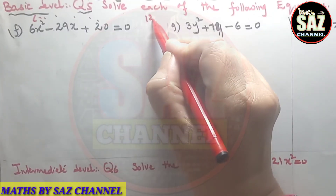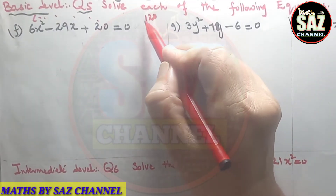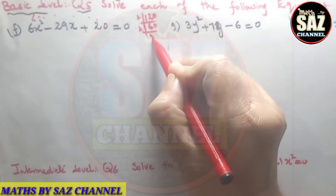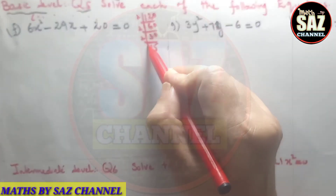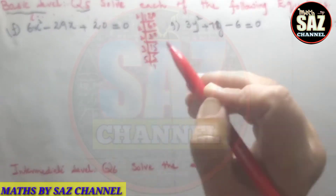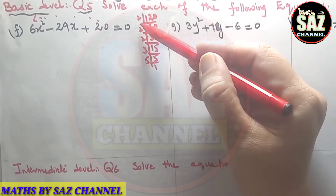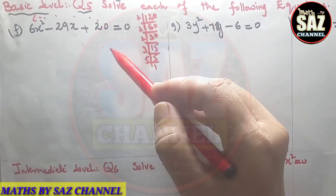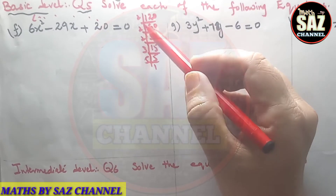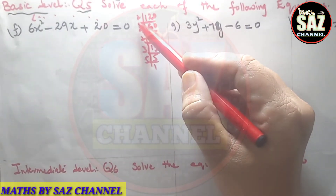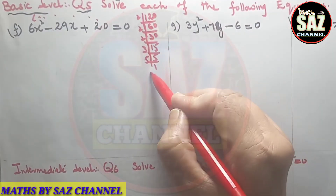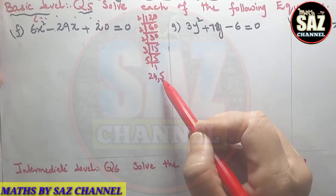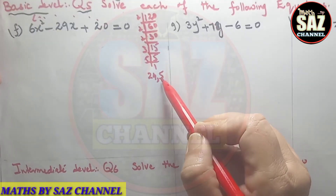Now I have to make the prime factors of 120: 2 × 60, then 2 × 30, then 2 × 15, then 3 × 5. I have to set these factors in such a way that when adding or subtracting I get -29, and when multiplying I get 120. Taking 24 and 5: 24 + 5 = 29, and 24 × 5 = 120. Let me verify: 5 × 4 = 20, carry 2; 5 × 2 = 10, plus 2 = 12 — yes, 120. So 24 and 5 is the suitable choice.